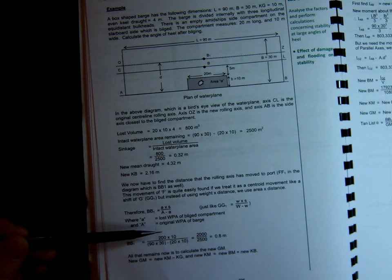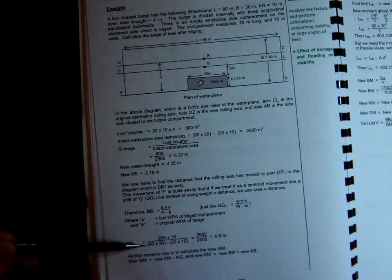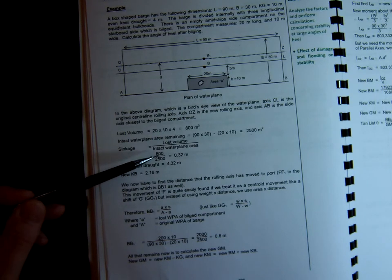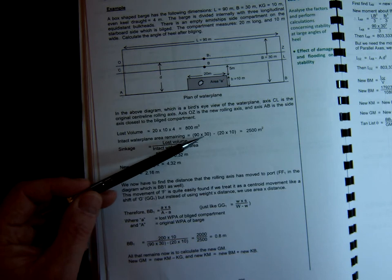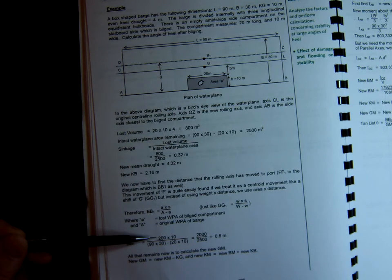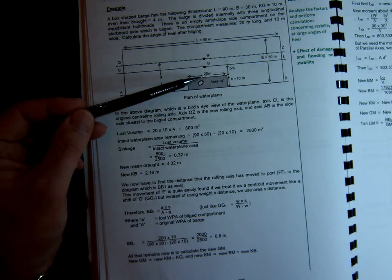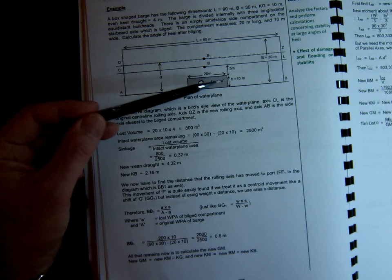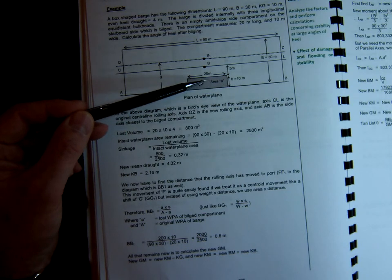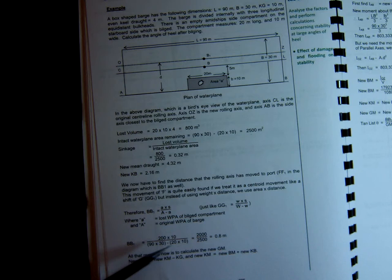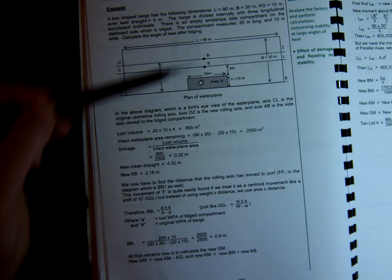So B to B1 on the top would be A times S, which is 200 times 10. Below, we'd have the original water plane area, which is 90 times 30 minus the 20 times 10, which we had in this value here. So B to B1, 200 by 10, so that's 20 times 10, 200 by the 10, gives us 0.8 of a meter. So that distance there is 0.8 of a meter.